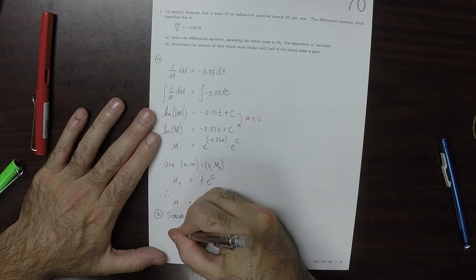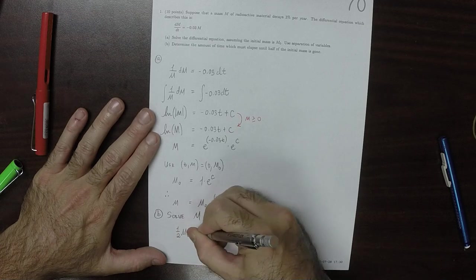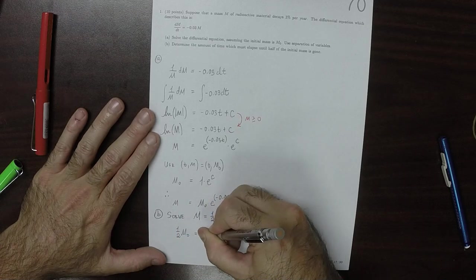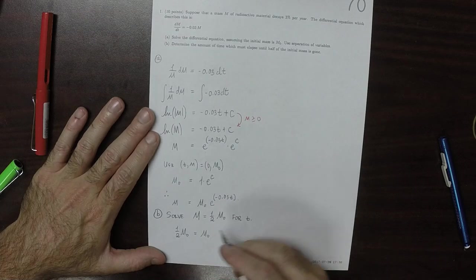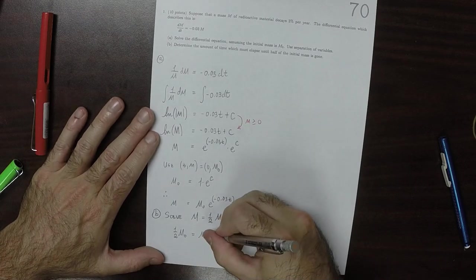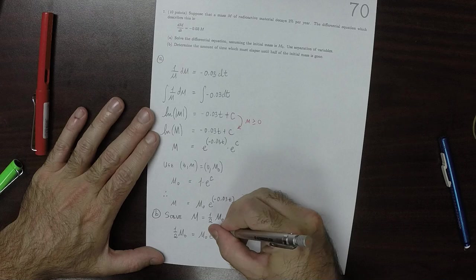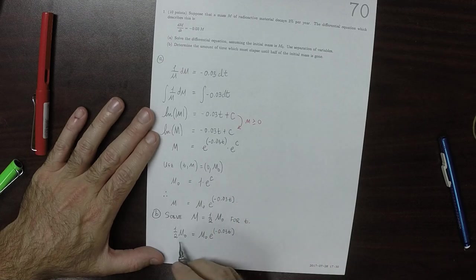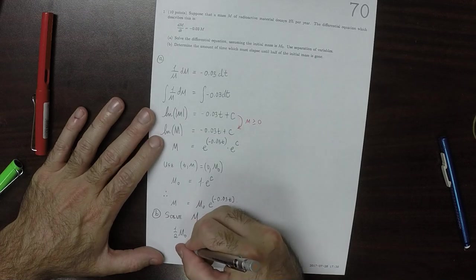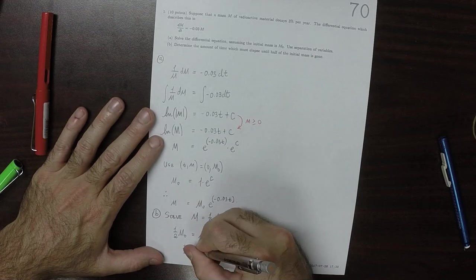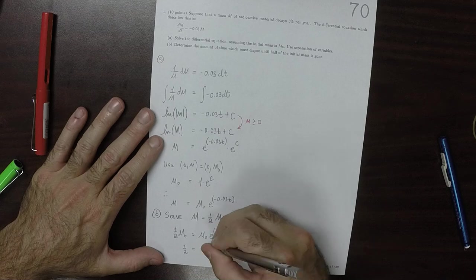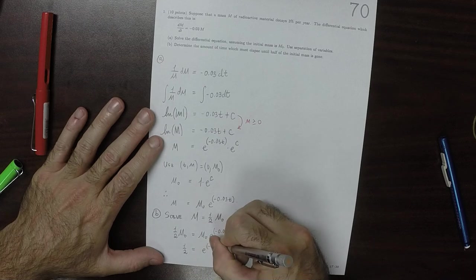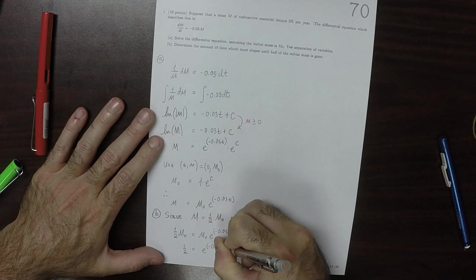So that is to say, we want to solve half m0 is m0 exponential negative 0.03 dT. Well, the m0s cancel. So this is half equal to exponential negative 0.03 dT.